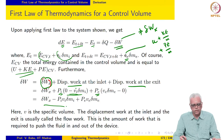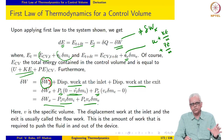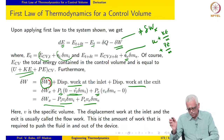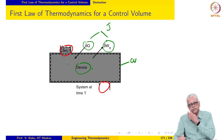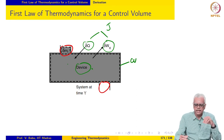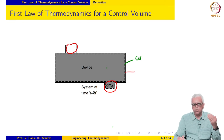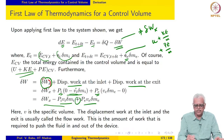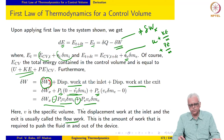Expanding the total work interaction δw gives δwₓ minus Pᵢvᵢδmᵢ plus Pₑvₑδmₑ. These Pv terms represent the amount of work required to push the fluid into and out of the device — the surroundings do work to push mass in (negative sign), and the system does work to push mass out (positive sign). This term is therefore called the flow work.